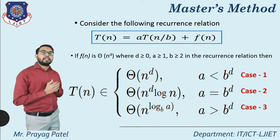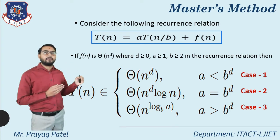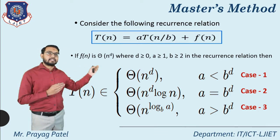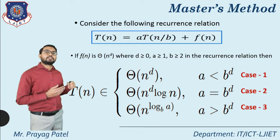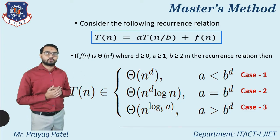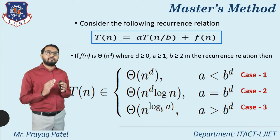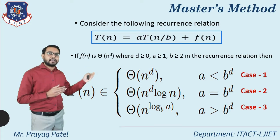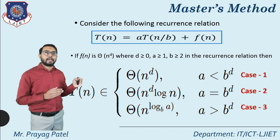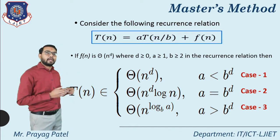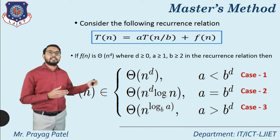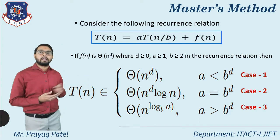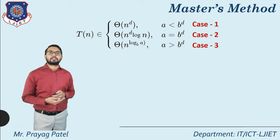Case 1: T(n) = Θ(n^d) if a < b^d. Case 2: T(n) = Θ(n^d log n) if a = b^d. Case 3: T(n) = Θ(n^(log a base b)) if a > b^d. These three equations are used to solve master's method examples.